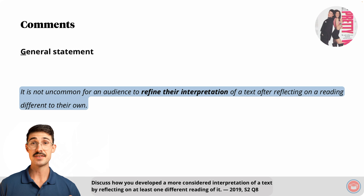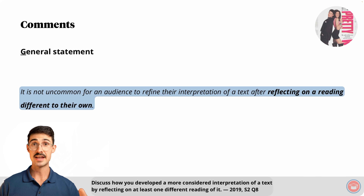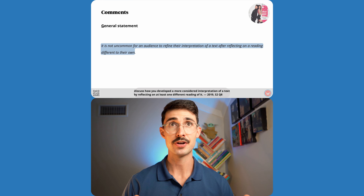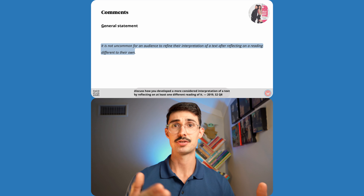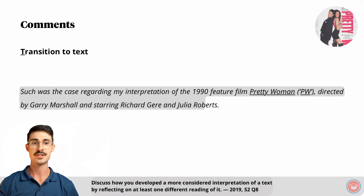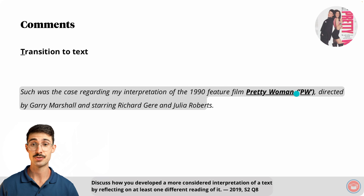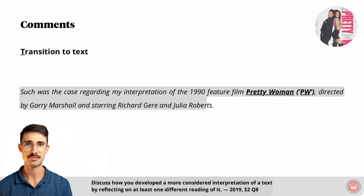Now let's discuss comments in relation to each main element. Starting with the general statement — specifically the phrase 'refine their interpretation' refers to the 'developed a more considered interpretation' part of the question. And 'reflecting on a reading different to their own' refers to the 'reflecting on at least one different reading of it' part of the question. Overall, this is a general statement because it refers to some of the main elements of the question without analysing them or relating them to a text. Now, on to the transition to text. This sentence transitions to the plot synopsis by introducing the text. It also states essential information — when it was released and who it was directed by. I abbreviated Pretty Woman to PW because I'll be referring to this title a lot throughout the essay and wanted to avoid writing each letter every time.